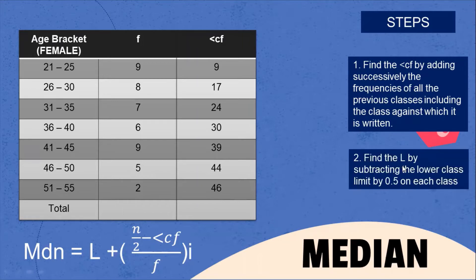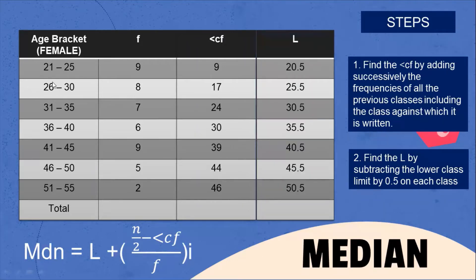Next, find the lower class boundary (L) by subtracting the lower class limit by 0.5 for each class. The lower class limits are 21, 26, 31, 36, 41, 46, 51. Subtracting 0.5: 20.5, 25.5, 30.5, 35.5, 40.5, 45.5, 50.5.